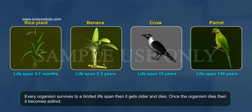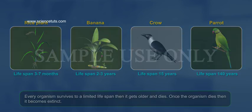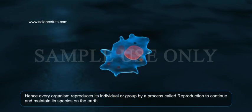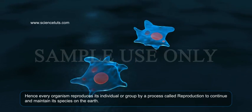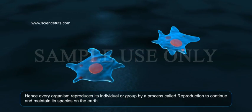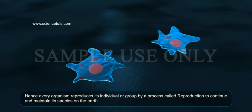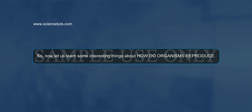How do organisms reproduce? Every organism survives to a limited lifespan, then it gets older and dies. Once the organism dies, it becomes extinct. Hence, every organism reproduces its individual or group by a process called reproduction to continue and maintain its species on the earth.